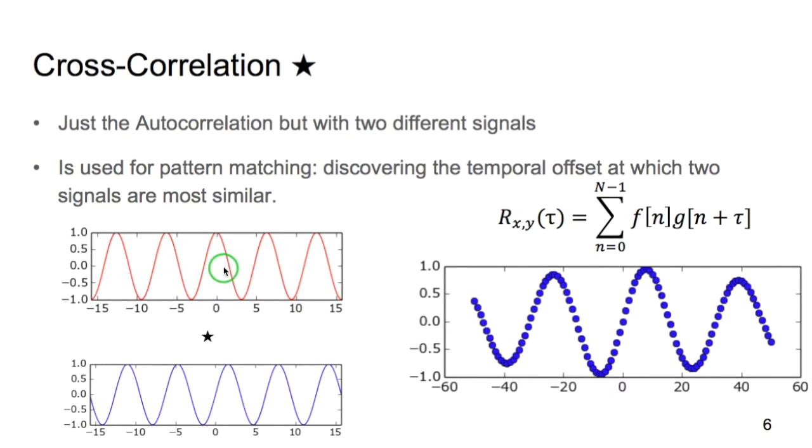So here we have two signals with a small temporal offset. And you'll notice this is the cross-correlation. The signal is maximal with a lag equal to the temporal offset between the signals.